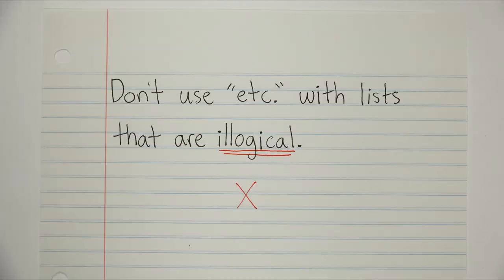Okay, and the final tip with etc is that we don't want to use it with a list that isn't actually logical. So what does that mean exactly? A list that isn't logical? Well, when you're listing a bunch of sports you play, or a bunch of fruit you like, or your favorite colors or something,